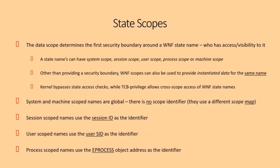The second piece of a state name is its scope, which determines the initial security and visibility boundary around a WNF state. A state name can be global, unique to a session, unique to a user, or unique to a process. There are some rules — certain scopes don't make sense for certain lifetimes. For example, you couldn't create a permanent name that is process-scoped, because once your process is gone that scope is gone, and no one could ever open it again.